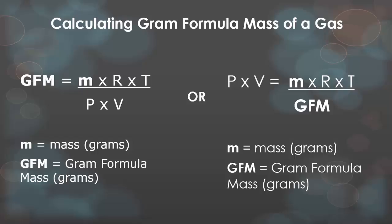Another way to look at this example is by using these two different formulas. On the left we have the gram formula mass is equal to mass times the constant times temperature in Kelvin all over pressure times volume. You could also switch it around. Let's say you have pressure and volume but you don't know the GFM. So you could say pressure times volume is equal to mass times the constant times temperature in Kelvin over the gram formula mass. Both of these formulas are rearrangements from the original formula we just showed you.